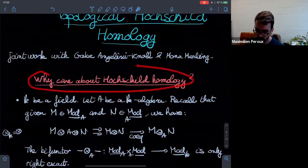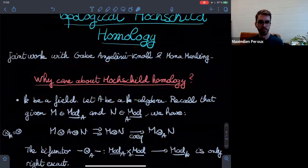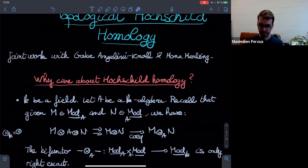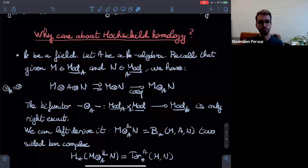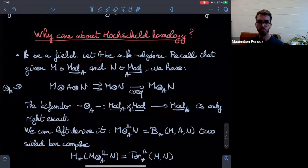Why would you care about Hochschild homology in the first place? Let me take you through a little journey. For simplicity let k be a field — things are still true if k is not a field but one has to be careful — so let k be a field. Now let A be a k-algebra in the regular sense. Then I can consider a right module M over A and a left module N over A.